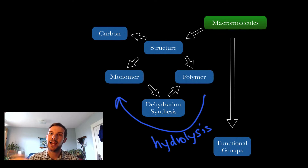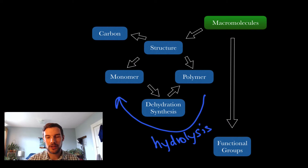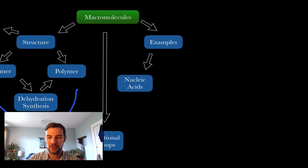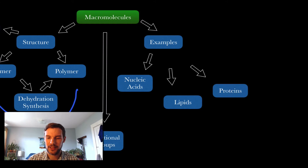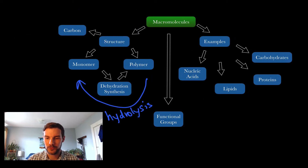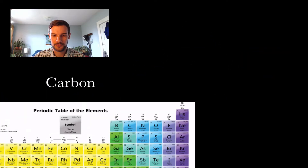We're going to talk about functional groups, which are attached to macromolecules to perform a certain function or incite a behavior. The four macromolecules you need to know for this class are: nucleic acids (DNA and RNA), lipids (fats), proteins — not just for your muscles, they perform many functions — and carbohydrates, which are quick sugars providing fast energy.